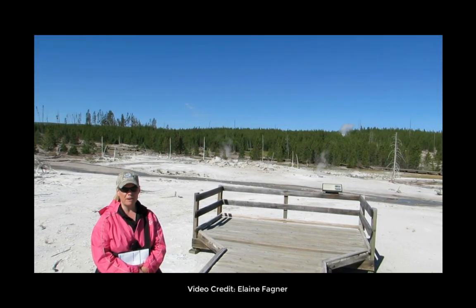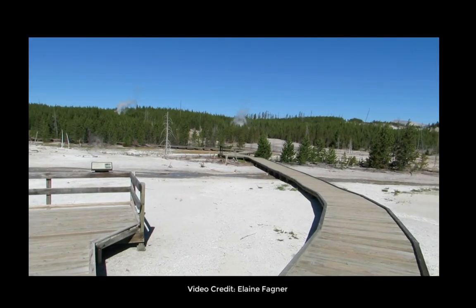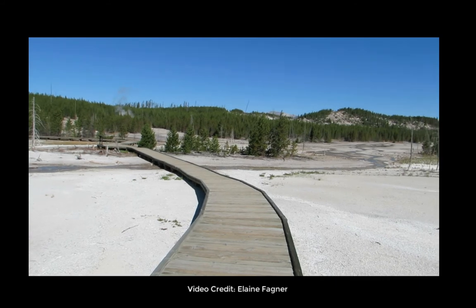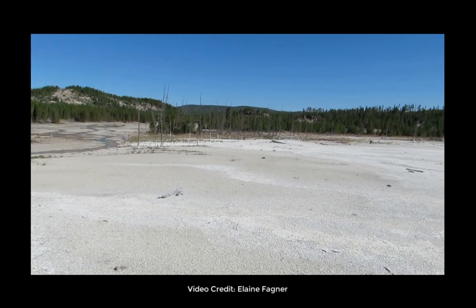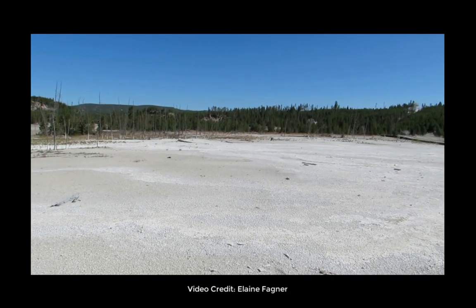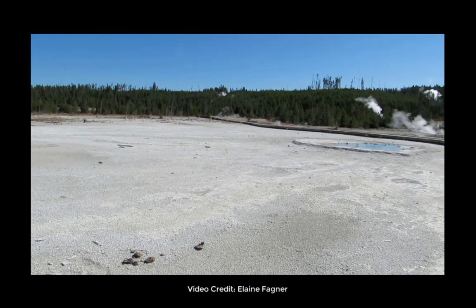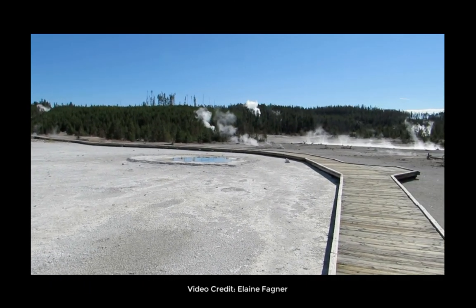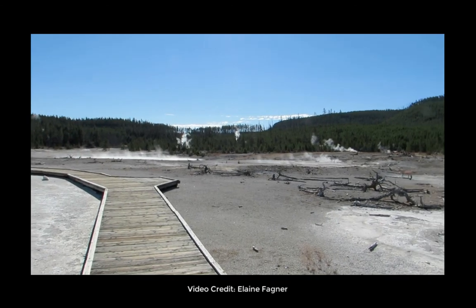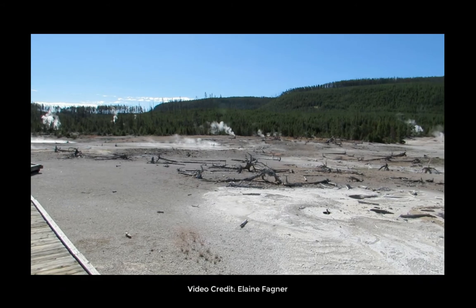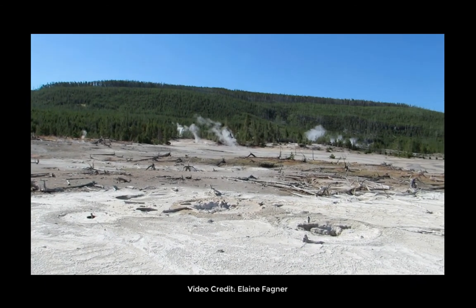We're at Norris Geyser Basin back basin. Notice it's fairly barren where you see the geyser area — specifically the rhyolitic material. Norris Geyser Basin is so acidic that fumaroles, mud pots, and other material coming out of the ground can compromise the boardwalk, making some areas not accessible. In the steam in the background is Steamboat Geyser. You can definitely see evidence of highly acidic thermal features.